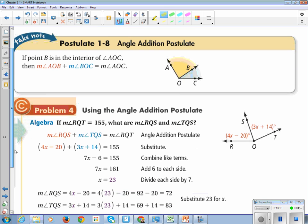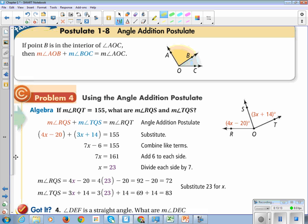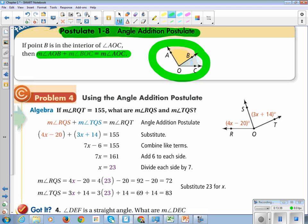Just like we have the Segment Addition Postulate, we have the Angle Addition Postulate. So let's write that down. Draw the picture: angle AOC with B shooting off in the middle. The measure of angle AOB plus the measure of angle BOC is equal to the measure of angle AOC. So the two added together equal the total.